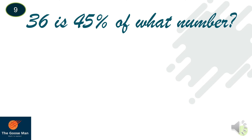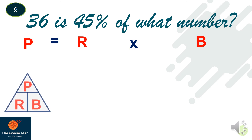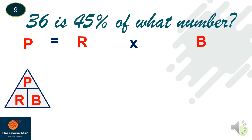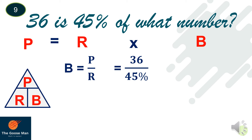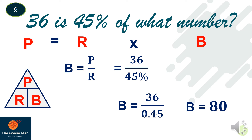Since you now have an idea in solving percentage, base, and rate, let's try to use the formula with this example: 36 is 45% of what number? 36 is our percentage, 45% is the rate, and the base is what we are looking for. Using the formula, base equals percentage divided by rate: base equals 36 divided by 45%, or 36 divided by 0.45, which equals 80.